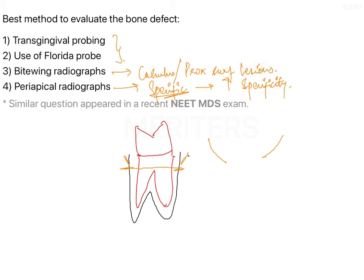The problem with periapical radiographs is that they are two-dimensional, so when there is an interdental crater, you cannot identify it. Coming to the Florida probe: it has two main functions — it is a calibrated probe that helps identify the depth of the pocket, and it also helps identify the CEJ. It is an automated probe. However, it does not help you identify the morphology of the bone defect pattern.